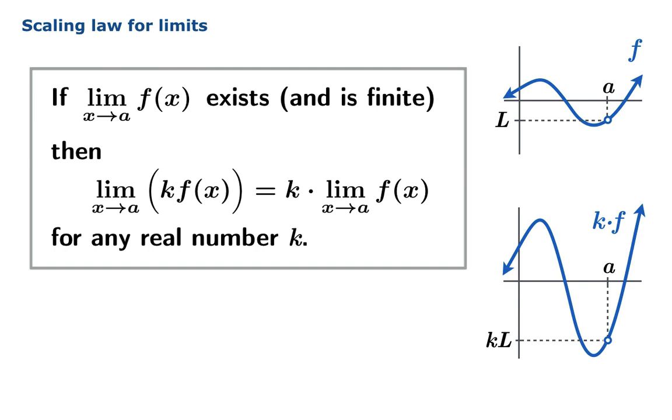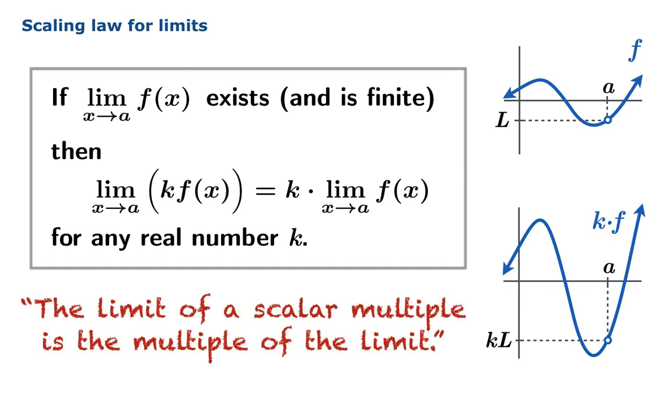So we have a scaling law for limits. If the limit as x approaches a of f of x exists and is finite, then the limit of k times f is k times the limit, or what we could say is the limit of a scalar multiple is the multiple of the limit.